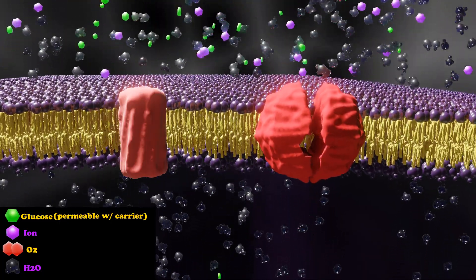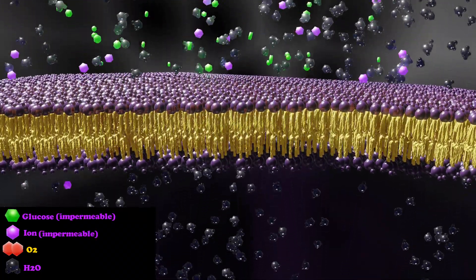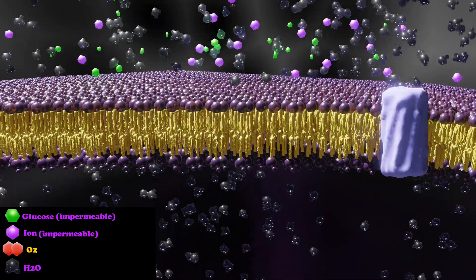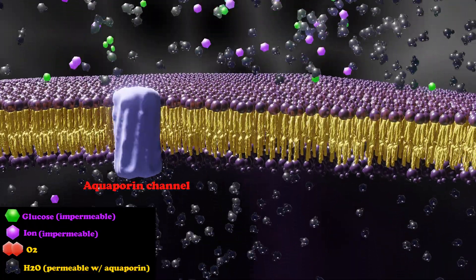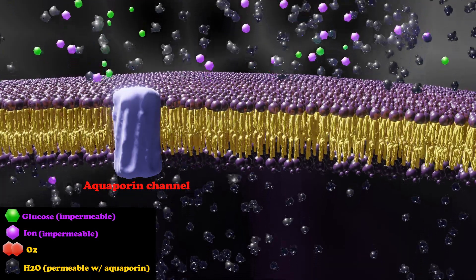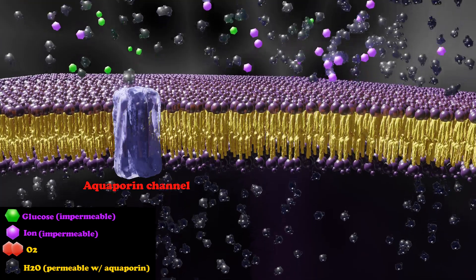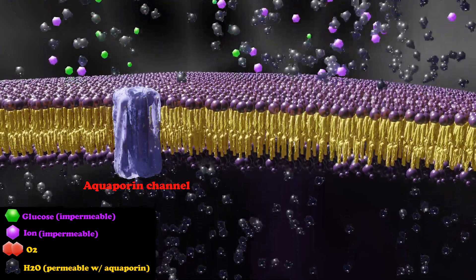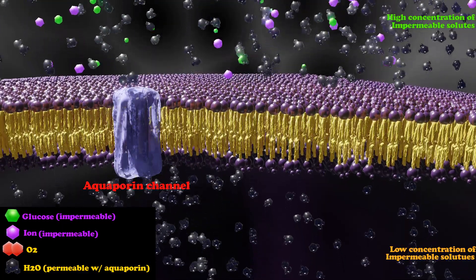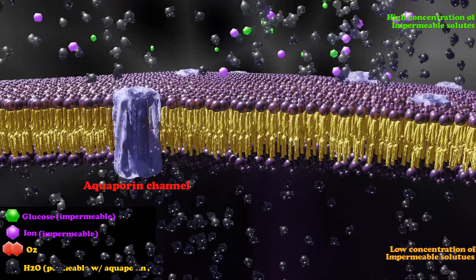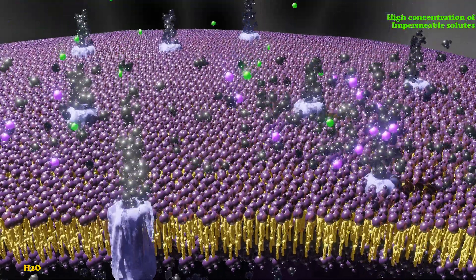Now you may be asking: how do we get water to transfer between cells? We have a protein called an aquaporin. The movement of water is specifically determined by the solutes on the inside and outside of the cell — specifically the impermeable solutes. If we have a high concentration of impermeable solutes on the outside of the cell, water is going to travel in the direction of the high impermeable solutes.